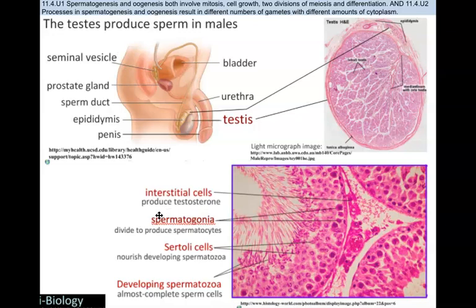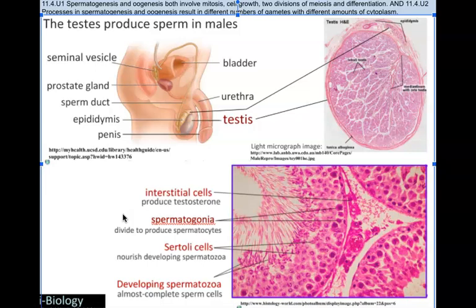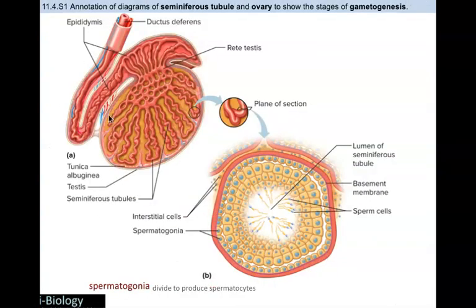The spermatogonia are the parent cells, because when you make gametes you need parent cells that have the full number of chromosomes. These then reproduce to make the cells that continue to divide and produce those gametes. The cells undergoing mitosis are the spermatogonia — that's where the mitosis is involved. They need to keep reproducing to make more parent cells in order to continue making more gametes. The IB wants you to annotate diagrams of the seminiferous tubule and ovary to show the stages of gametogenesis.